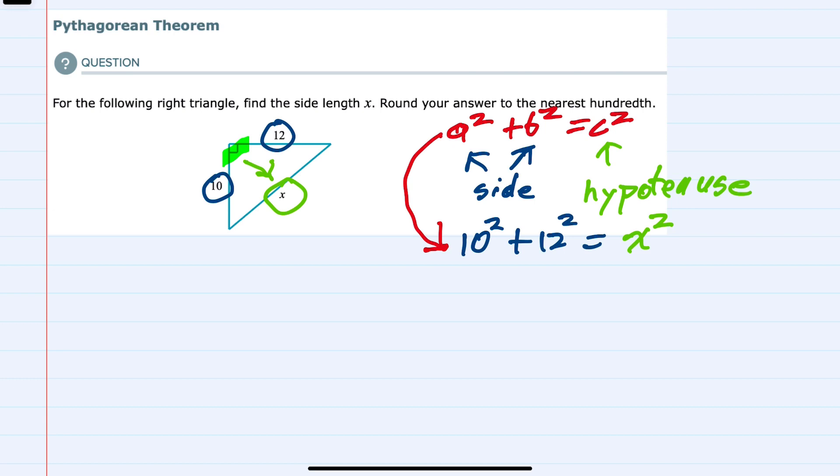So having done the substitution, we can now solve for x first by squaring the 10. That would be 100 plus squaring the 12 is 144 equals x squared. And then doing the addition, we have 244 equals x squared.